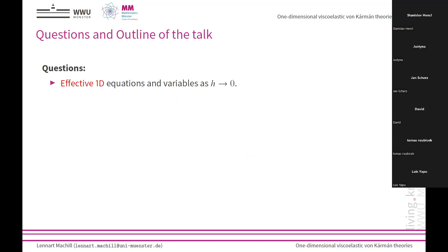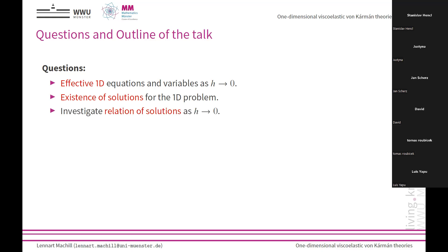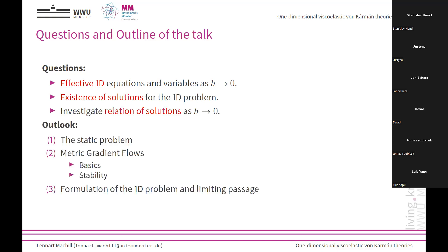This brings me to the outline of the talk and to some questions. The questions that arise are: what are the effective one-dimensional equations, and what are the limiting variables? So far we only have one variable W depending on all three coordinates, and we want to identify effective limiting variables. We want to know if there exist solutions to the limiting problem, and we are interested in the relation of these problems. First I will talk briefly about the static problem and the gamma convergence result, which only concerns the elastic case. Then I will give a brief introduction to gradient flows in metric spaces, also discussing stability which is relevant for the limiting passage. Finally, I will formulate the one-dimensional problem and pass to the limit.